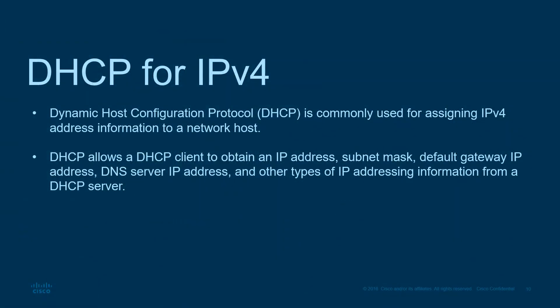To eliminate typographical errors from manually typing IP addresses, we can use DHCP for IPv4. Dynamic Host Configuration Protocol is commonly used for assigning IPv4 address information to network hosts. DHCP allows a DHCP client to obtain an IP address, subnet mask, default gateway, DNS server IP address, and other types of IP addressing information from the DHCP server. The DHCP server could be a router or a computer acting as a DHCP server.